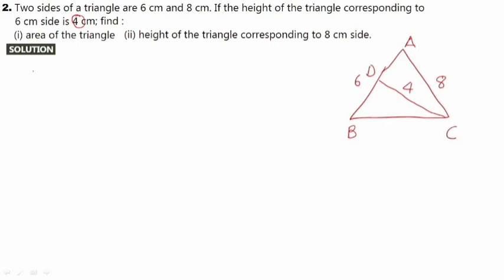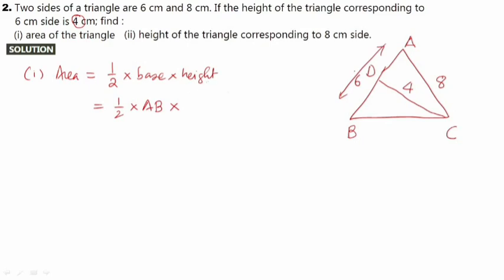For part 1, we use the formula: area = half × base × height. The base is AB, which is 6 centimeter, and the corresponding height is CD, which is 4 centimeter. So area = half × 6 × 4 = 12 centimeter square.